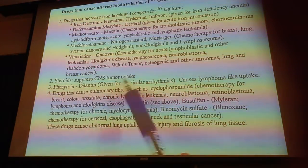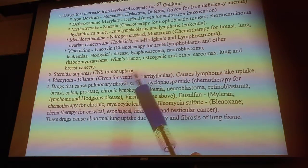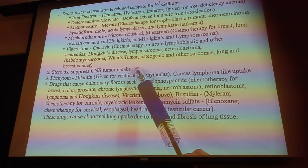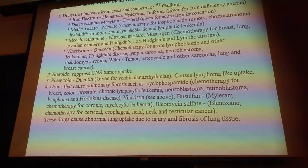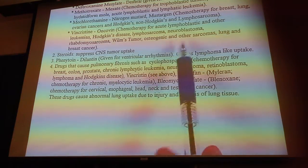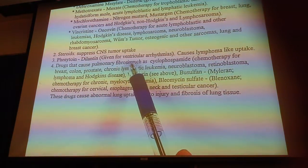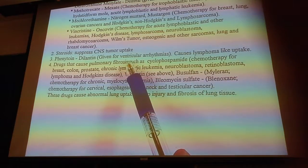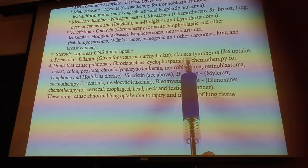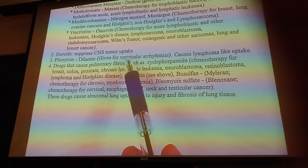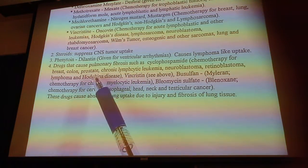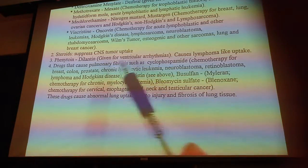Steroids are another concern. If a patient is taking anti-inflammatory drugs, both white blood cell imaging and gallium imaging will not work very well for detecting inflammation. If a patient is taking Dilantin — used for ventricular arrhythmia and epilepsy — you'll notice it causes lymphoma-like uptake. You'll see hot spots wrapped around the lymphatic chains along the aorta going up and down the body.